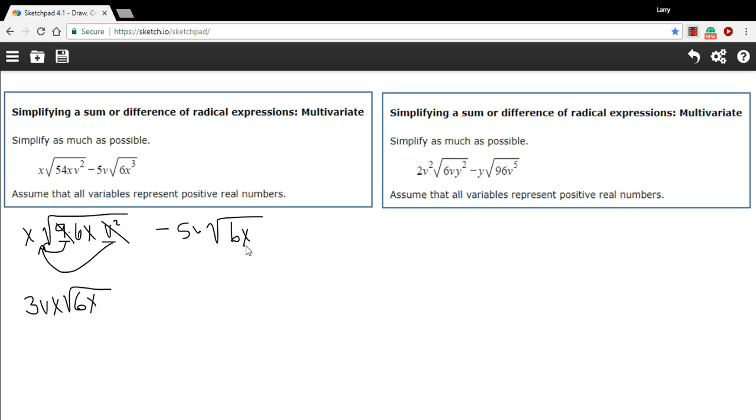And then it should be obvious that I can pull out this perfect square, this x squared. So this x squared becomes an x and I can rewrite this term as 5v times x times the square root of, and what's left here is just the 6x.